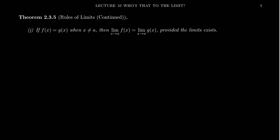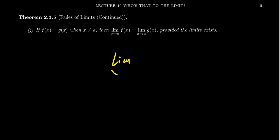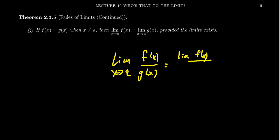One of the limit laws I want to point out that we saw earlier was number D, which told us that the limit as x approaches a of f of x over g of x is equal to the limit of f of x over the limit of g of x as x approaches a. The limit of a quotient is a quotient of limits, but the one exception is when the denominator is zero — this limit law only applies if the denominator is non-zero.